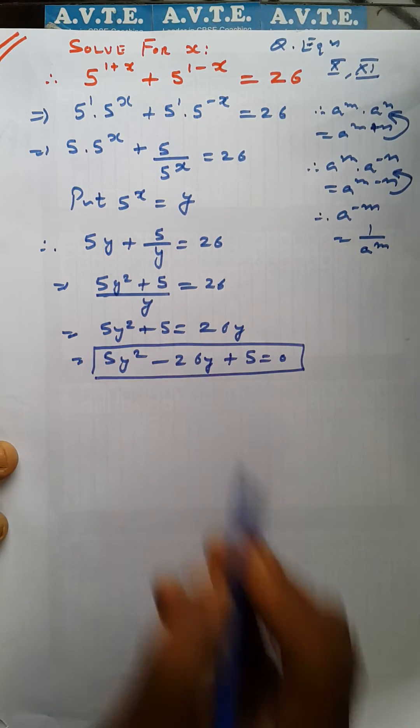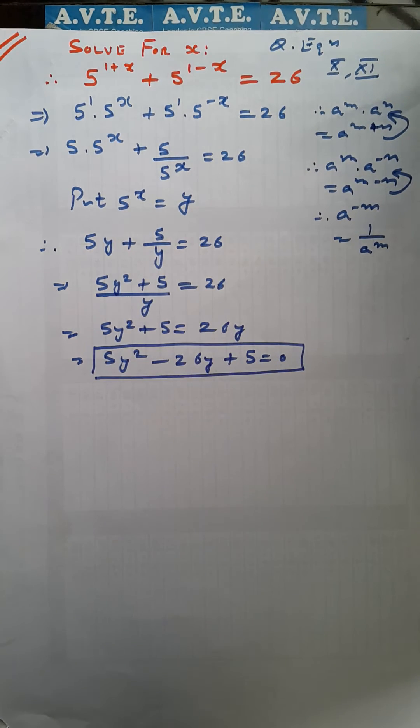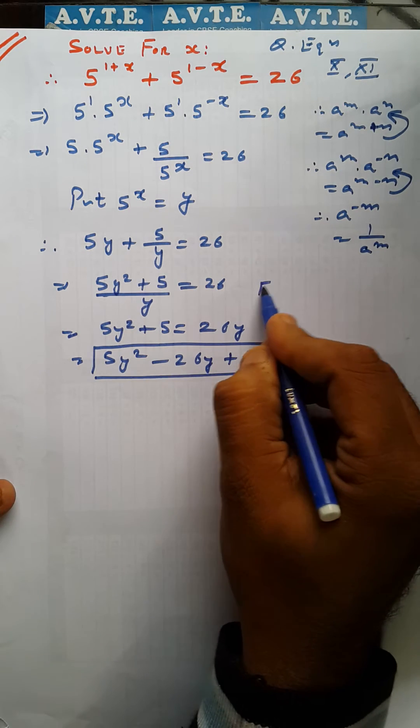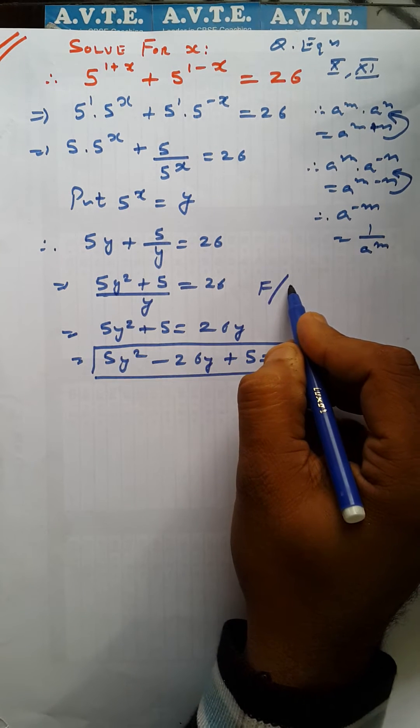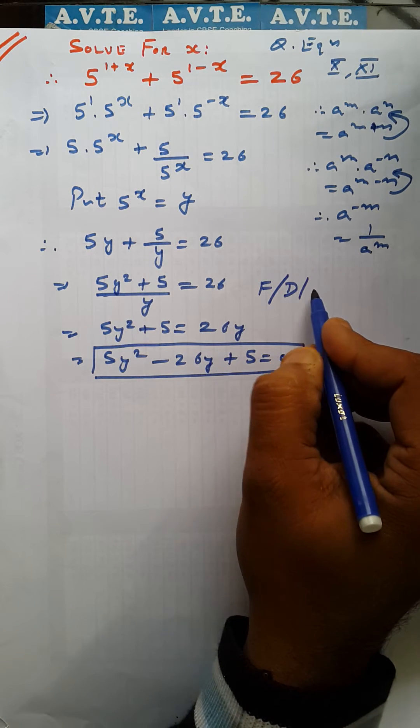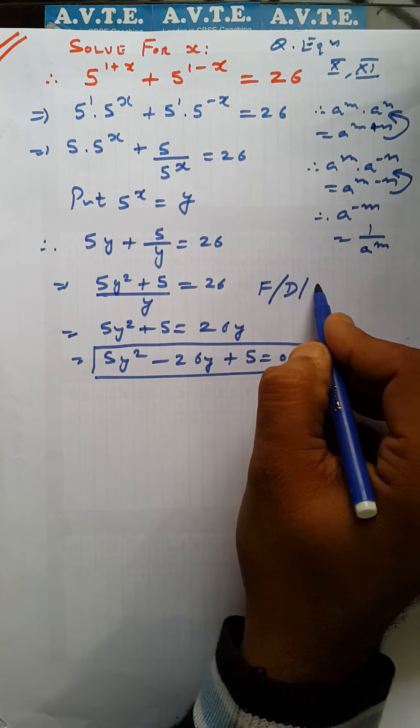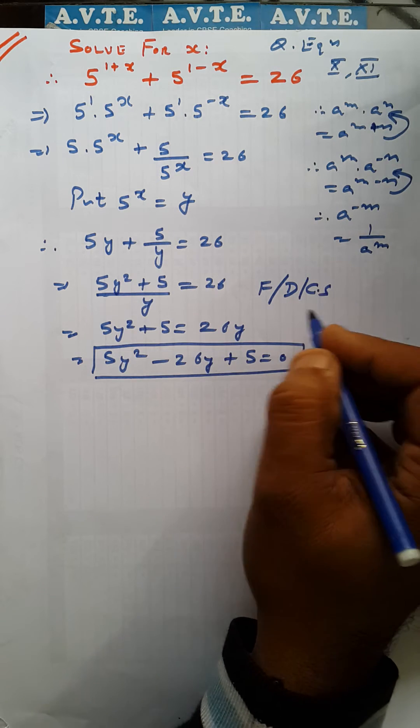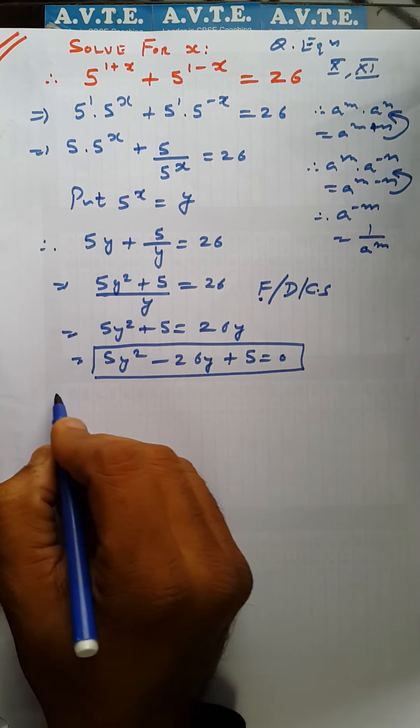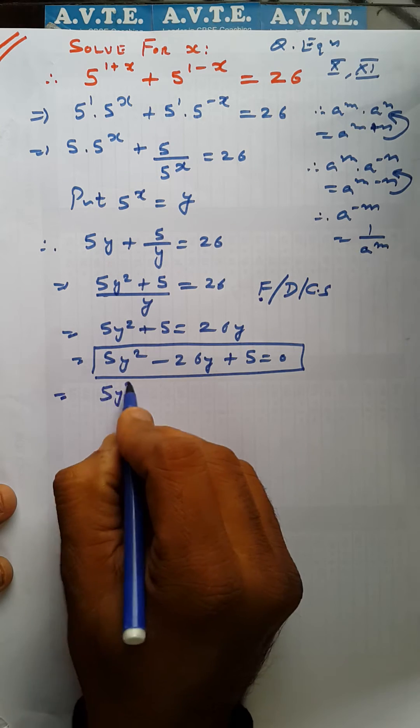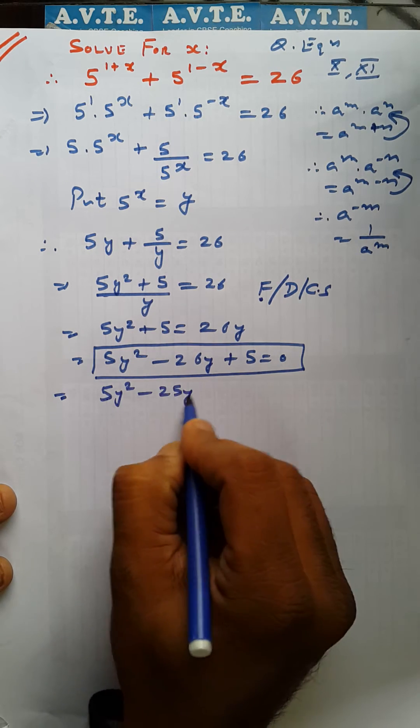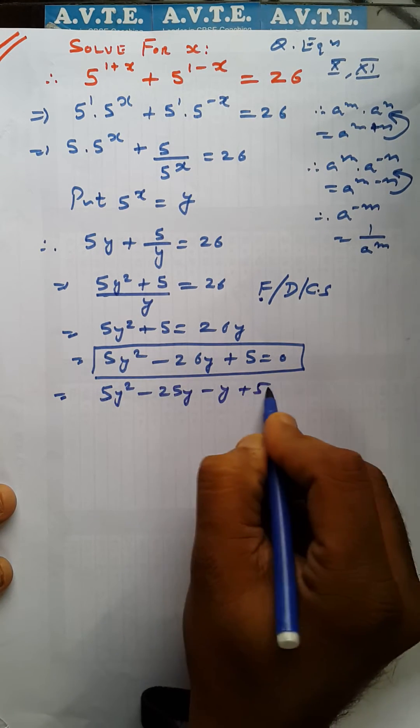Now you can solve this equation by quadratic formula or middle term, anything like factorization middle formula, quadratic D formula, or your favorite is completing the square method. So anything. I prefer this. 5y squared minus 25y minus y plus 5 is equal to 0.